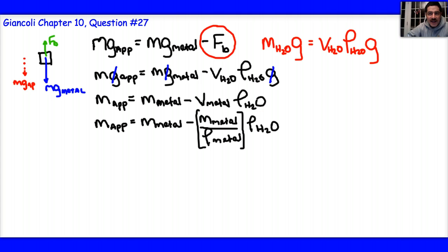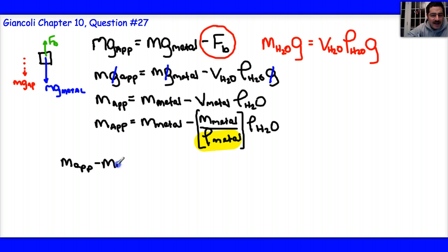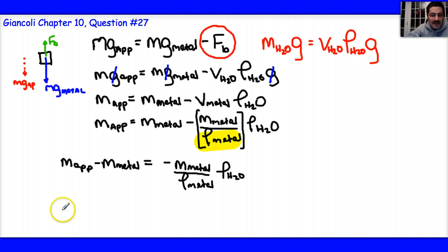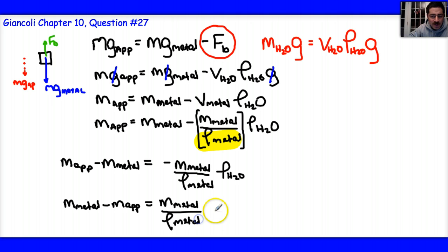At this point I'm looking for the density of the metal. The apparent mass equals the mass of the metal minus the mass of the metal over the density of the metal, times the density of water. I'll subtract the mass of the metal from both sides: apparent mass minus mass of the metal equals negative mass of the metal over density of the metal, times density of water. Multiplying both sides by negative one gives: mass of metal minus apparent mass equals mass of the metal over density of the metal, times density of water.